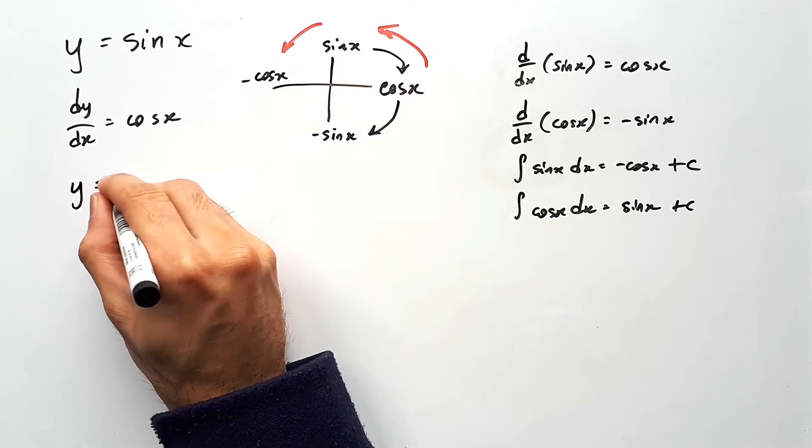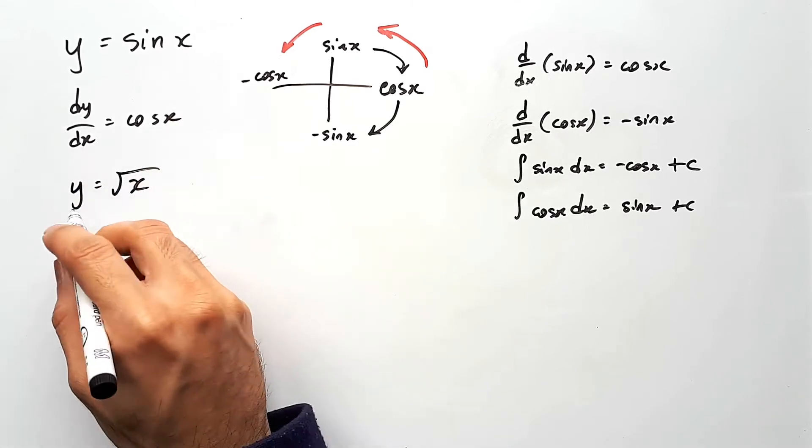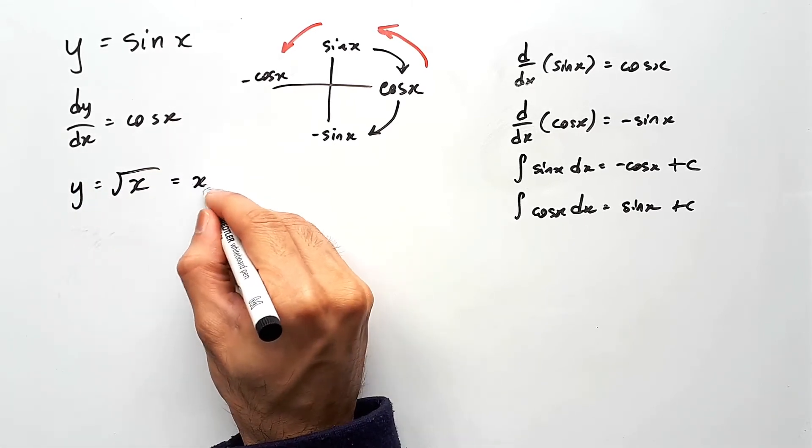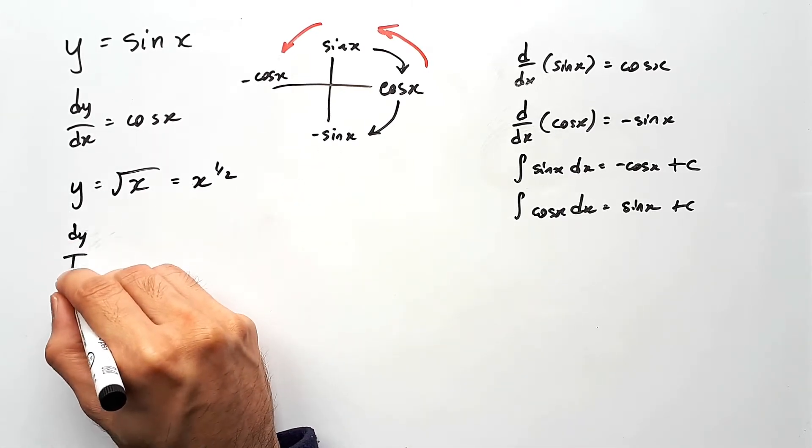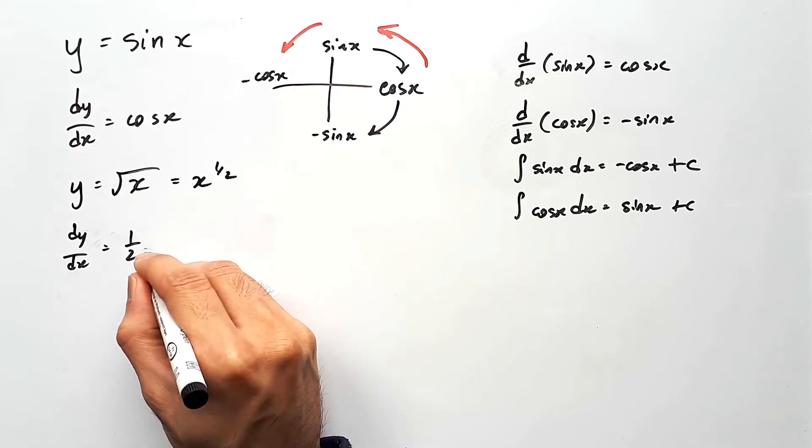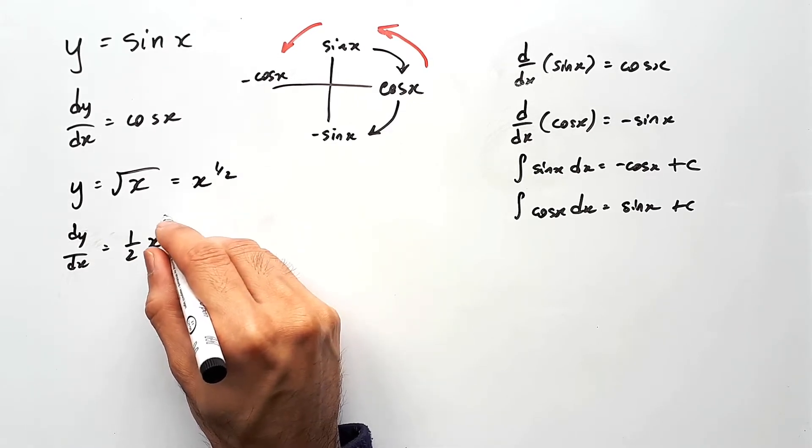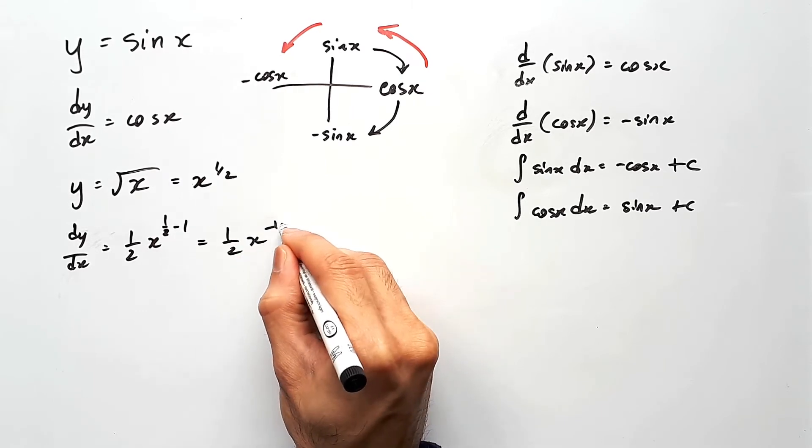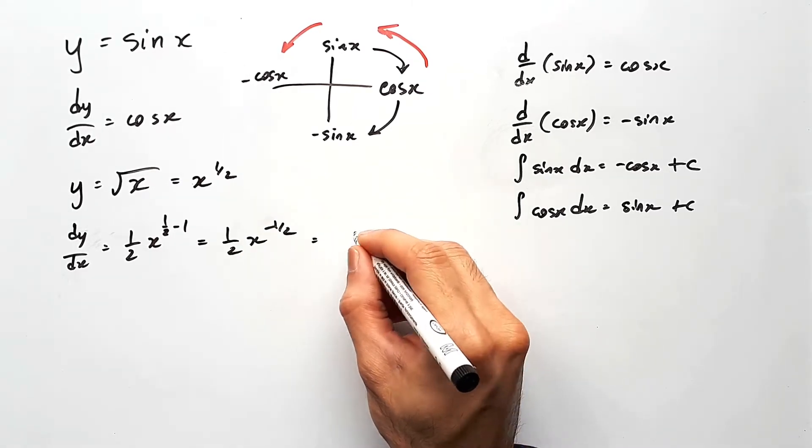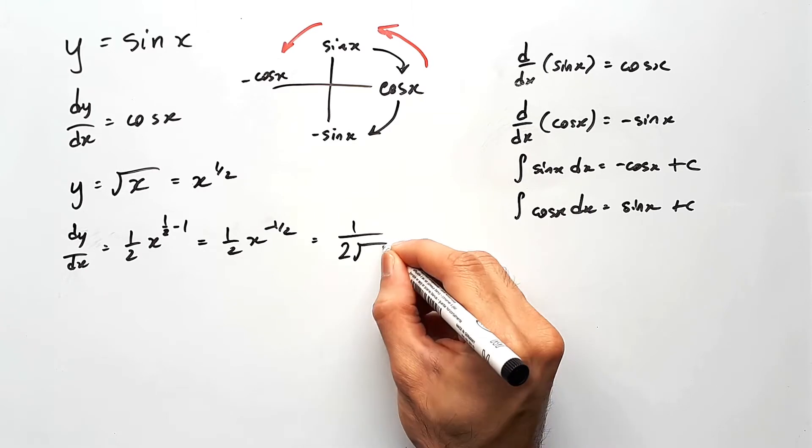The next one is y equals square root of x. This is basically just x to the power of 1 and 2. So you can use your power rule for this. dy on dx would be half of x to the power of negative half, because you're going to minus 1 there. And so we get this, which basically simplifies to 1 over 2 root x.